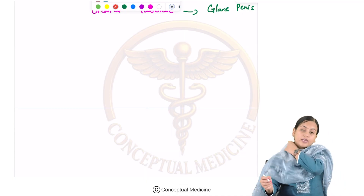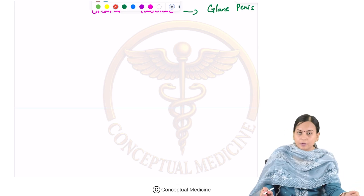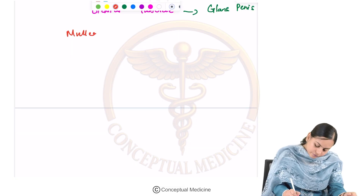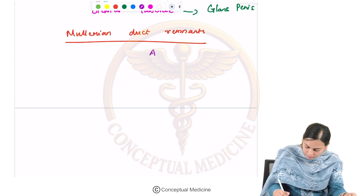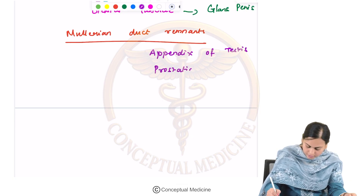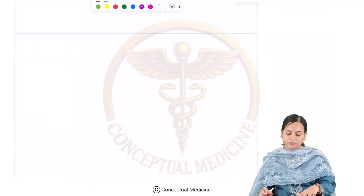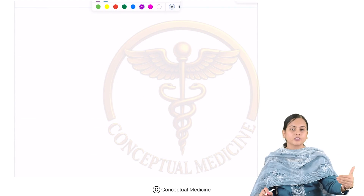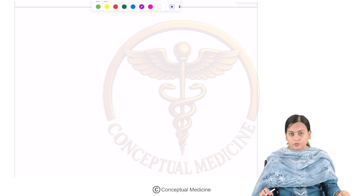The Müllerian duct regresses in a male, but some remnants can still be present. The Müllerian duct remnants seen in a male are the appendix of testis and the prostatic utriculus. This covers how external and internal genitalia develop in the male, along with the responsible hormones, genes, and chromosomes.